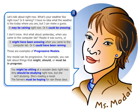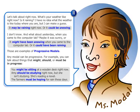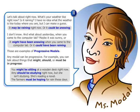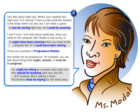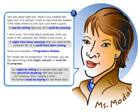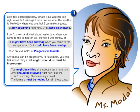Let's talk about right now. What's your weather like right now? Is it raining? I have no idea what the weather is like today where you are, but I can make a guess. It may be raining right now, or it could be snowing. And what about yesterday when you came to the computer lab? Maybe it was sunny, or it might have been snowing when you came to the computer lab, or it could have been raining.